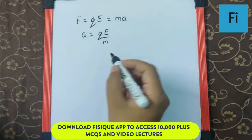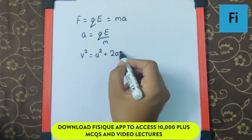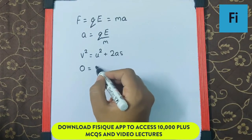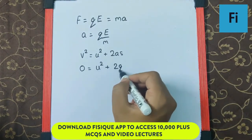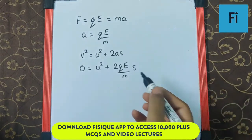We can use the kinematic equation v² = u² + 2as. The final velocity is 0, initial velocity is known, acceleration we just found is QE by M, and the distance S is what we are supposed to find.